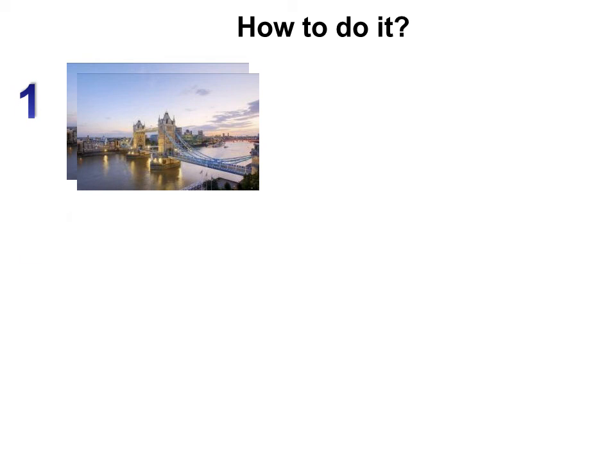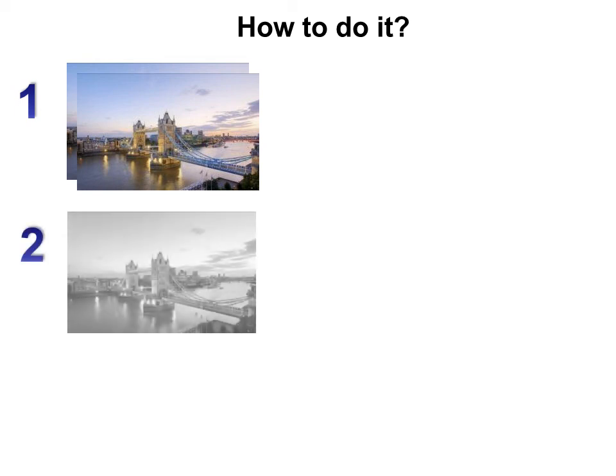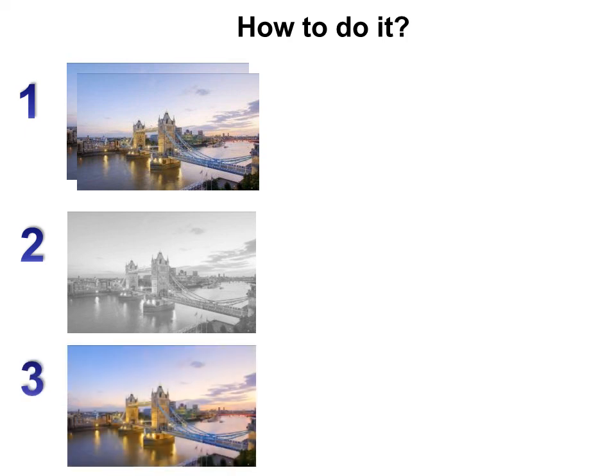Then you turn one into black and white by desaturating it. Remember, under color, we take out the color, and it becomes black and white. And on the second picture, I resaturated it — in other words, I made it a little deeper saturation so that the color stands out more. Then I cropped that one down so that I took out all the extraneous and showed just the part we want to emphasize.